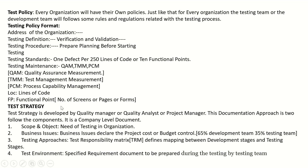Moving to test strategy: this is developed by a quality manager, quality analyst, or project manager. It is a company-level document. Components include: scope and objective — the need for testing in the organization; business issues such as project cost and budget control, with 65% allocated to development and 35% to testing; testing approaches; and the Testing Responsibility Matrix (TRM), which defines a mapping between development stages and testing stages.